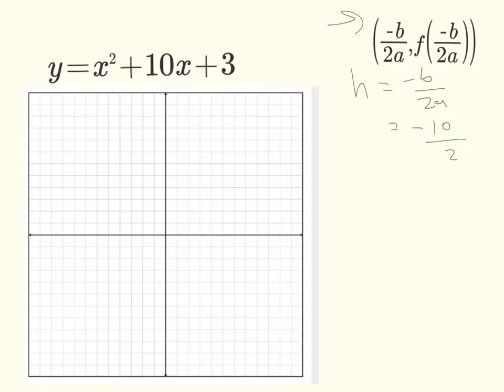So in this case, negative B is negative 10 over 2 times A. A is 1, so that's 2. So in our case, H is located at negative 5. Okay? So now that we have H, we can plug this into the equation, negative 5 into the equation for X. All right? So we're going to do that. Let's find K.